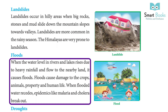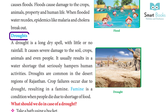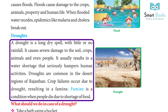Drought: A drought is a long dry spell with little or no rainfall. It causes severe damage to the soil, crops, animals and even people. It usually results in a water shortage that seriously hampers human activities. Droughts are common in the desert regions of Rajasthan. Crop failures occur due to drought, resulting in a famine. Famine is a condition when people die due to shortage of food.